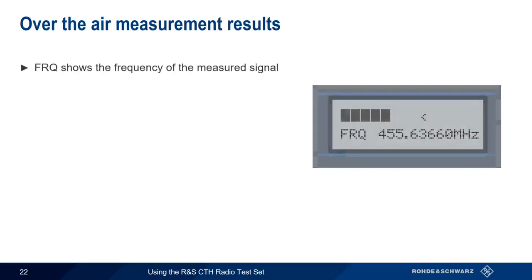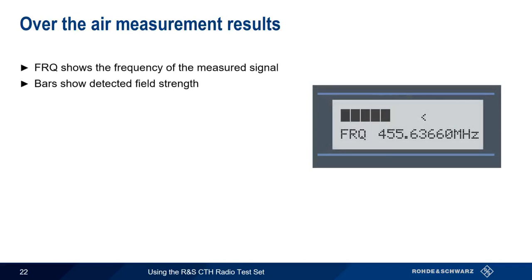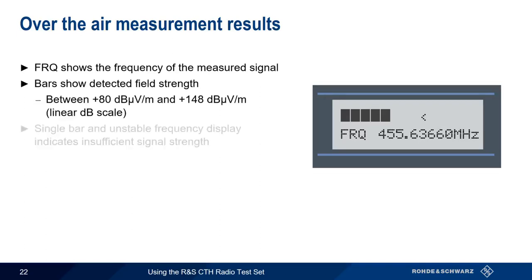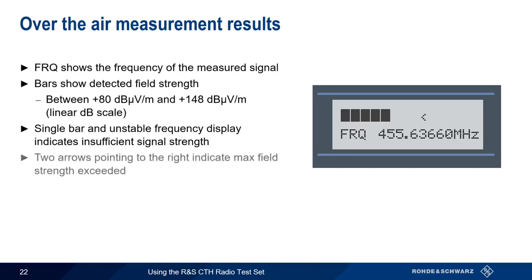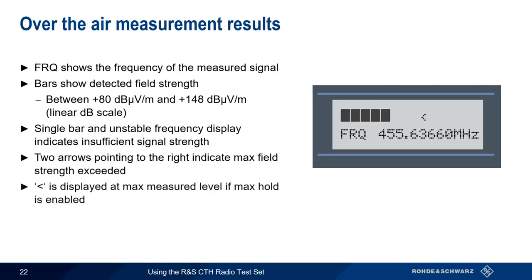The frequency of the measured signal is given in megahertz, and field strength is shown as a series of bars representing values between +80 and +148 dB microvolts per meter, using a linear dB scale. A single bar, or an unstable or changing frequency display, means there is insufficient signal strength for a measurement — in this case, move the CTH closer to the transmitting radio or antenna. Two right-pointing arrows indicate that max field strength has been exceeded. If Max Hold was enabled under Settings, a less-than sign indicates the maximum measured signal strength during the Max Hold period.